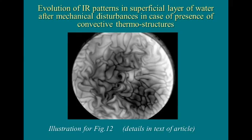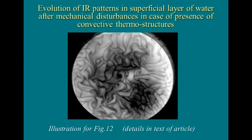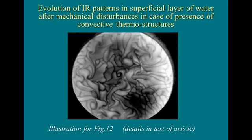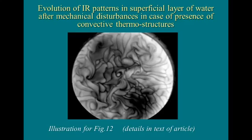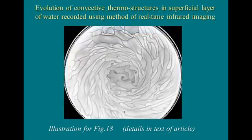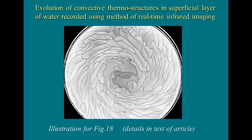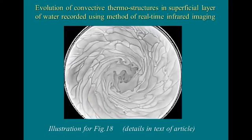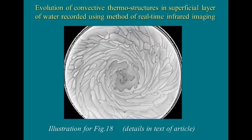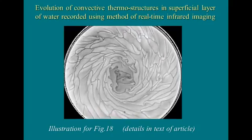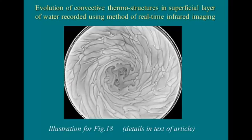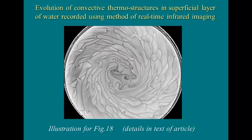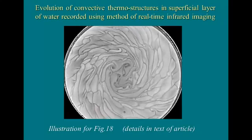Temperature distributions in superficial layers of water were studied using the method of real-time infrared imaging. This film fragment demonstrates evolution of convective cells observed during a transient process of water cooling in a round Petri dish 17 cm in diameter. Temperature is changing from 40 degrees centigrade at the first frame to 32 degrees centigrade at the last frame.